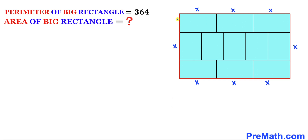Let me call the width of this tiny rectangle y. Then the other widths shown are y as well — this is y, this is y, and finally this is y as well.